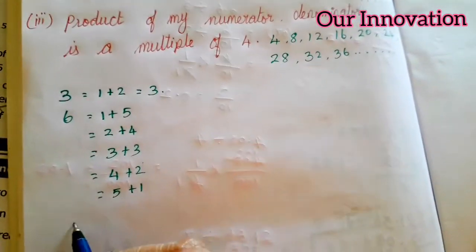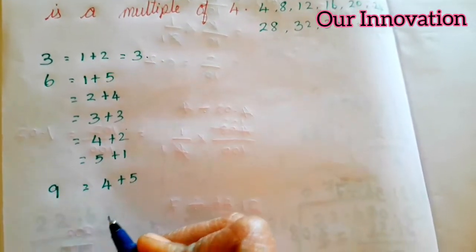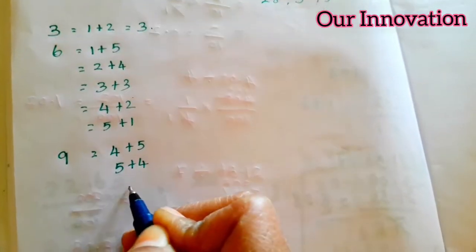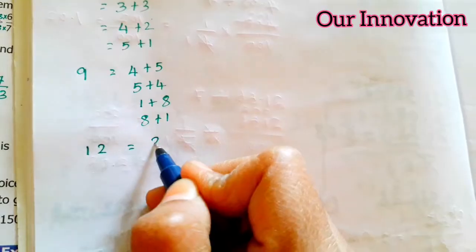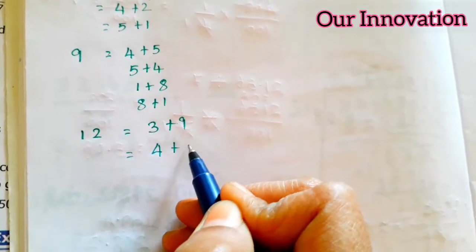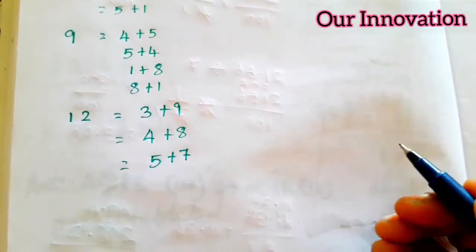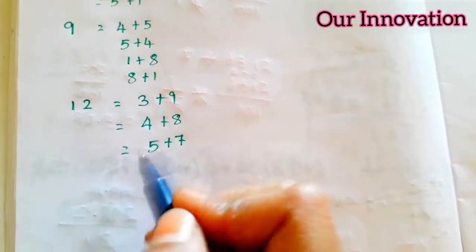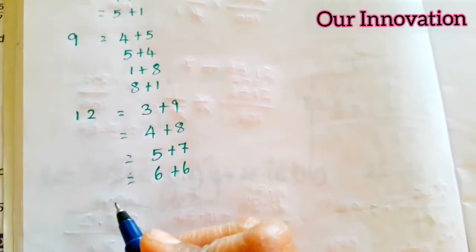Next, how are we going to do this? 9 is equal to: 4 plus 5, 5 plus 4, 1 plus 8, 8 plus 1. Students, now 12 is 12. How are we going to add 12? 3 plus 9, 4 plus 8, 5 plus 7, 7 plus 5, 6 plus 6. Okay, 12.